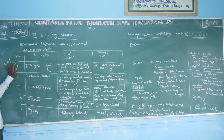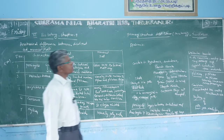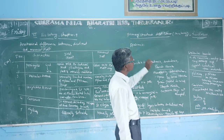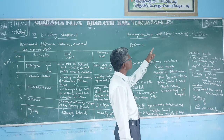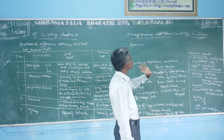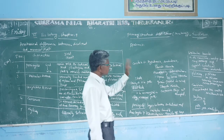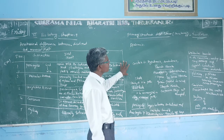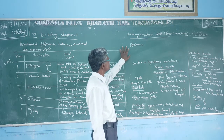That is all about monocot root and dicot root. Now let us look at monocot stem and dicot stem — the primary structure of dicot stem and monocot stem. For dicot stem, the example is sunflower. For monocot stem, the example is maize plant.